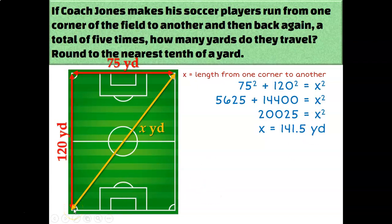Well, that's just the distance from one corner to another. But it says that Coach Jones is making them run from one corner to another and back again a total of five times. So if one lap is there and back, and I need to do that a total of five times, I'm actually going back and forth a total of 10 times.